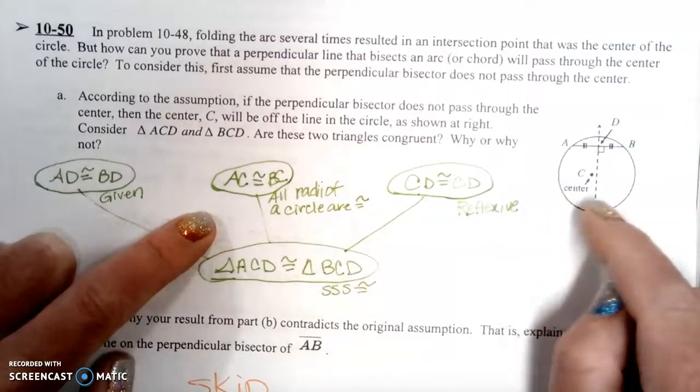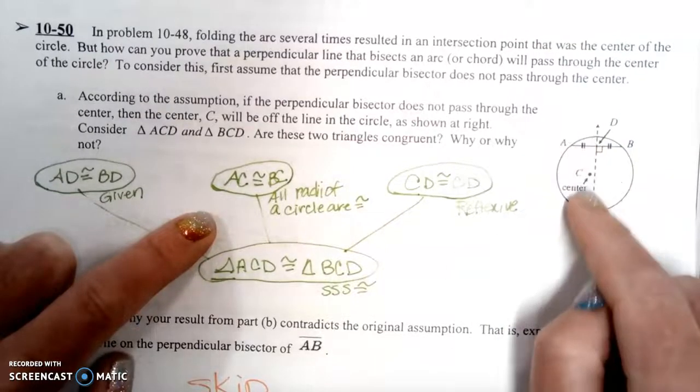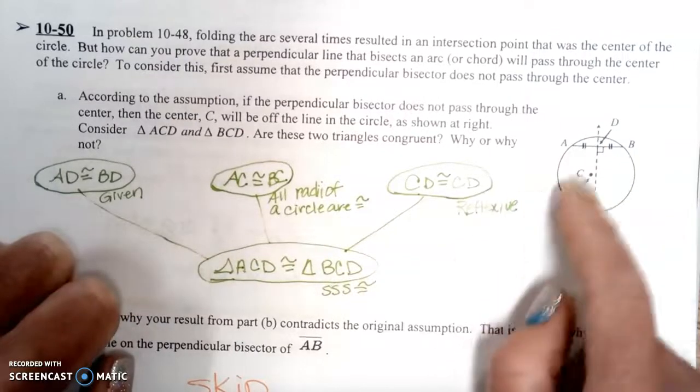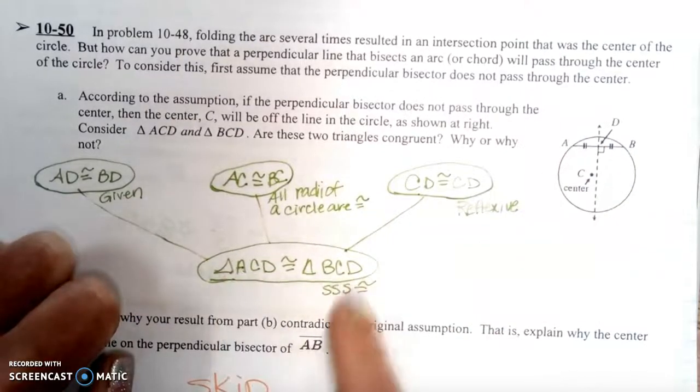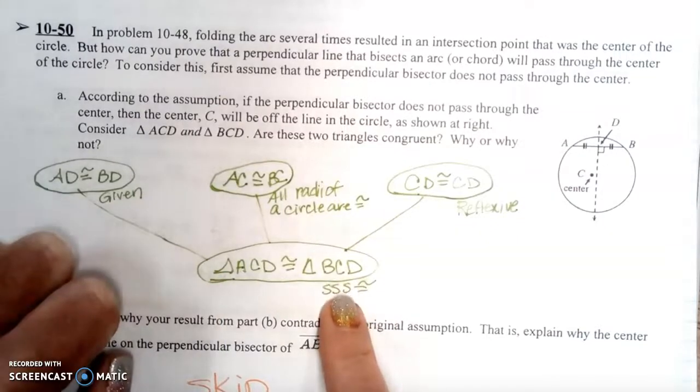And we know that CD is congruent to CD because of the reflexive property. So that's going to give us the two triangles congruent by side, side, side.